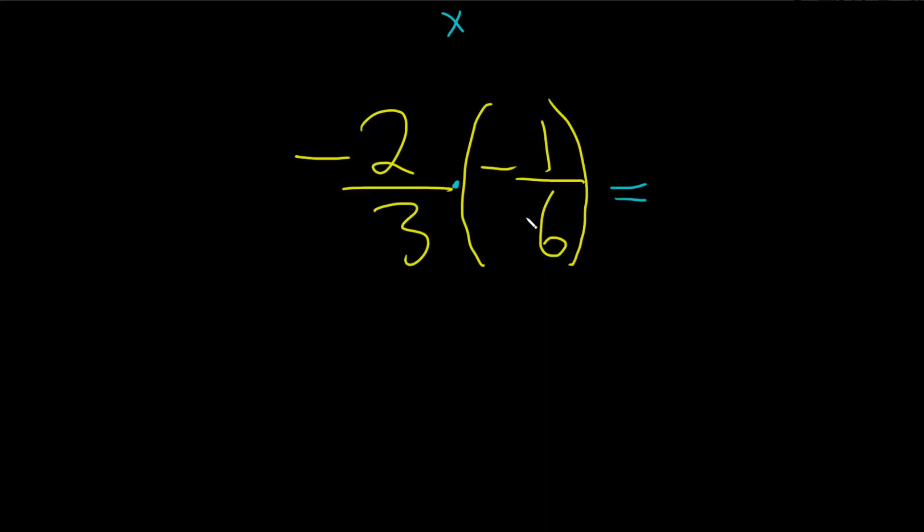So now we just have to worry about whether we can simplify it first. You can always cross out diagonal terms. Like the 3 and the 1, nothing in common. But the 2 and the 6, there's something in common here. The common factor is 2.